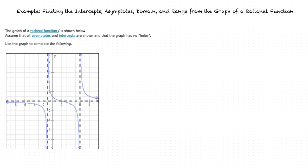Consider the following example. The graph of a rational function f is shown below. Assume that all asymptotes and intercepts are shown and that the graph has no holes.